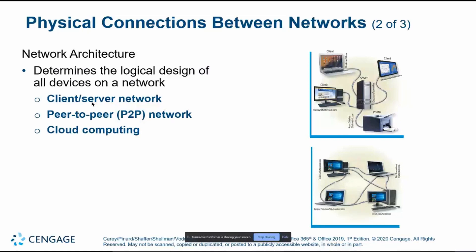Network architectures differ from topologies in that they describe what kind of devices are set up and who communicates with whom. The first is the client-server network, where everyone connects to a central server that handles the bulk of data processing and storage, while the clients do lighter work. A peer-to-peer network removes the need for a server entirely — everyone connects to everybody else, and more computers means a stronger connection.